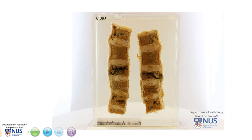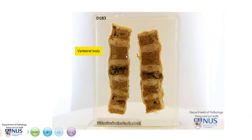This is a pathology specimen looking at the vertebral column, and we can see that it has been split longitudinally, and we're looking at the cut surfaces. Here we have the vertebral body and the intervertebral disc. The main pathology lies in the vertebral bodies, and we can see that there are several areas where the vertebral body cut surface looks abnormal.